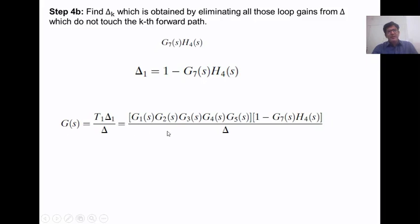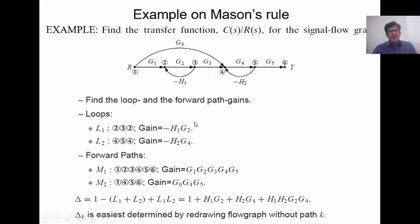Continuing with another example for a deeper understanding of Mason's Rule. Given a new signal flow graph, we identify how many forward paths and loop gains exist. We find two loops: loop one with gain minus h1·g2, and loop two with gain minus h2·g4.